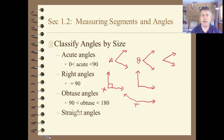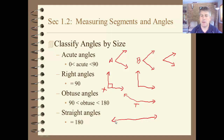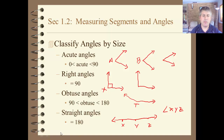And then finally, straight angles. Straight angles are exactly 180 degrees — that's going to be a straight line. With a vertex, we have points X, Y, and Z. Angle XYZ is a straight angle — that's exactly 180 degrees.